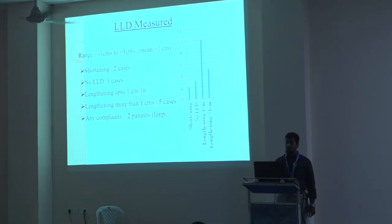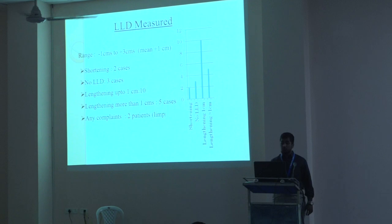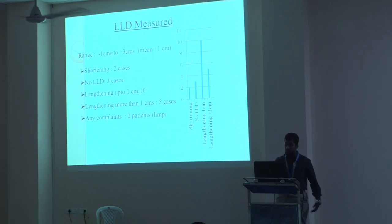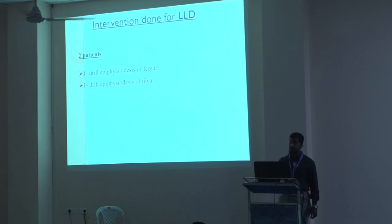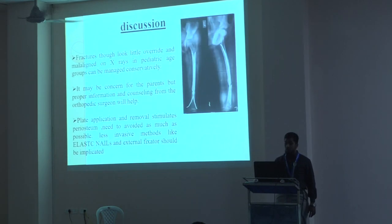LLD measured ranged from minus 1 cm to plus 3 cm with a mean of plus 1 cm. Shortening was present in 2 cases, no LLD in 3 cases, LLD of less than 1 cm in 3 cases, and more than 1 cm in 4-5 cases. Two patients with significant limping were operated for epiphysiodesis — one for femur and another for tibia.